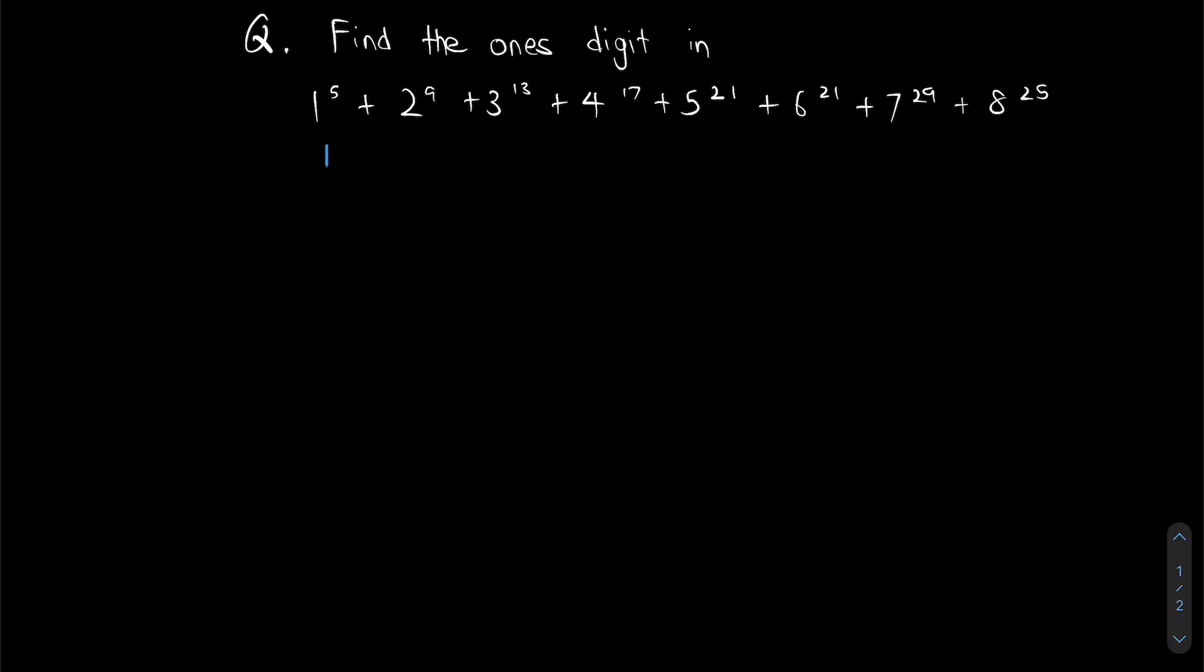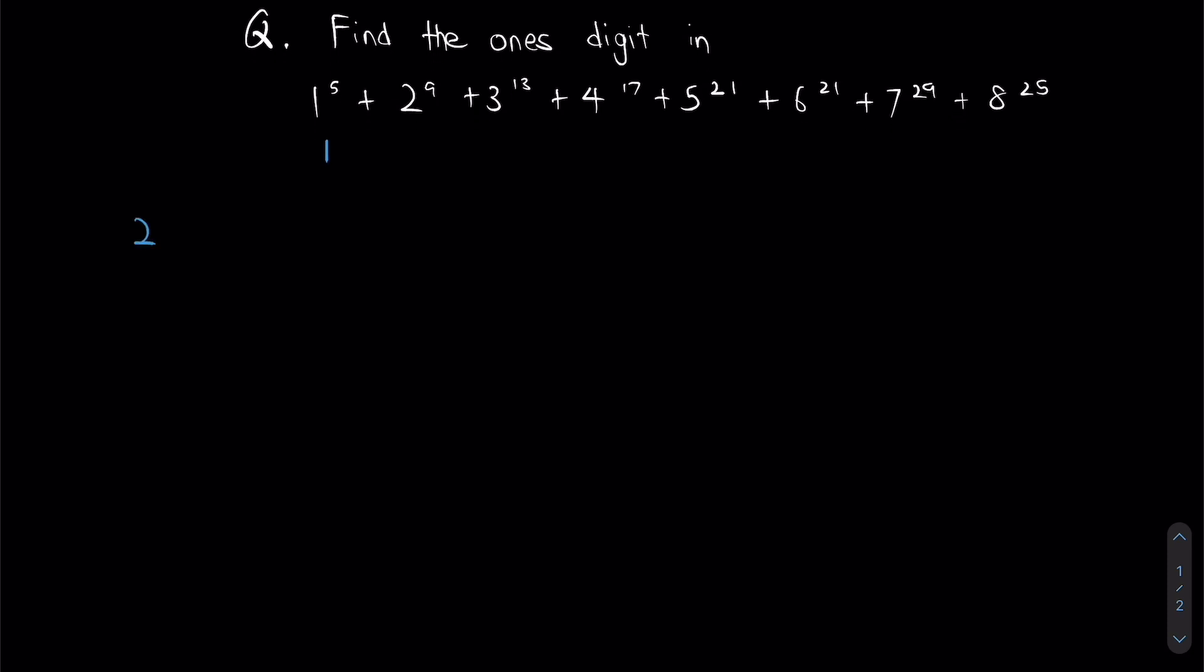Now, let's look at the pattern for 2. So for 2, I am actually going to write the pattern over here. The ones digit for 2 actually repeats every 4 numbers, which means once I reach 2 to the power of 5, my ones digit will go back to being 2. So what that means is 2 to the power of 9 will actually have the same ones digit as 2 to the power of 1, since 9 divided by 4 gives me 2 and remainder 1.